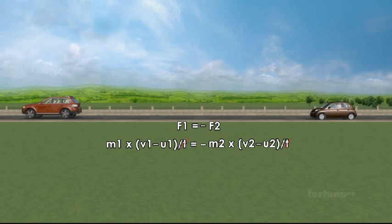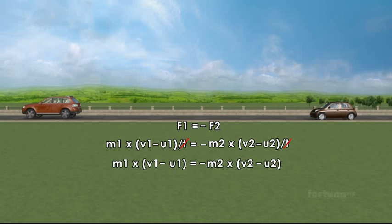We can cancel T, the common factor of time in the equation. M1 into V1 minus U1 equals minus M2 into V2 minus U2. The equation can then be simplified.